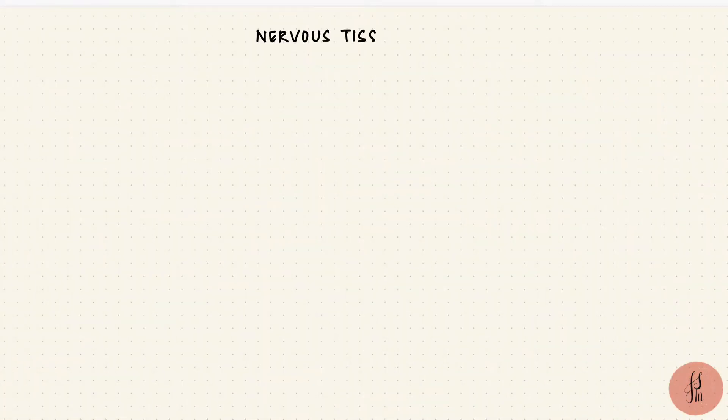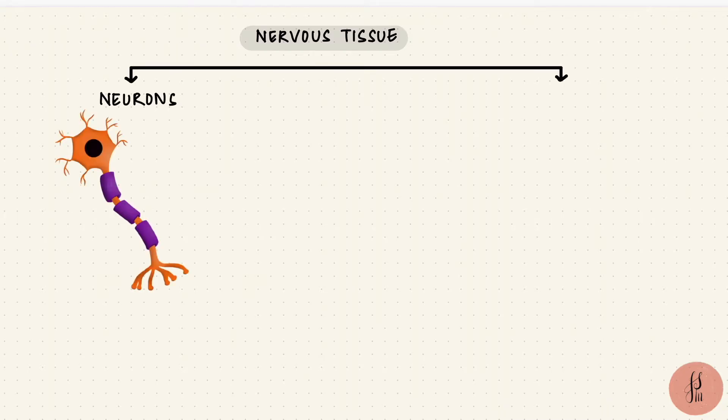The nervous system, central and peripheral, has different types of cells. There are neurons, which are the functional core, like how we have nephrons in the kidney, but the other type of cells are neuroglial cells, or glial cells.